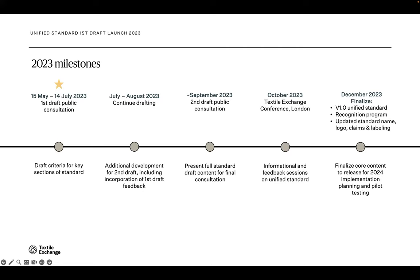In terms of where we are this year: we are now in the middle of the first public consultation, which started May 15th and will run until July 14th. While the public consultation is happening, we are already drafting towards draft two of the Unified Standard, scheduled to go out in September. We are simultaneously working on the new scopes for draft two while also taking feedback into consideration to refine the criteria we currently have. The second consultation will run through our conference in London at the end of October, where we will hold additional feedback sessions on the Unified Standard.